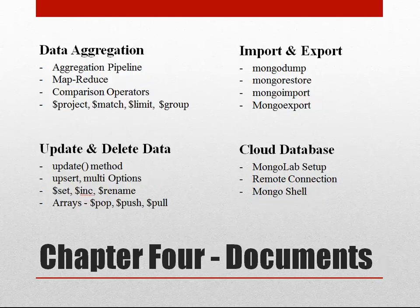In chapter four we're going to continue working with documents and the database — a document can be thought of as a row in a traditional database. We'll talk about aggregation, including pipeline and map-reduce types, and look at comparison operators as well as the project, match, limit, and group operators. I'll show you how to import and export databases using programs that come with MongoDB, and we'll learn how to update and delete data. We'll cover operators like set, increment, and rename, as well as array operators like pop, push, and pull.